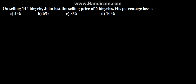The next problem in this series is on selling 144 bicycles. John lost the selling price of six bicycles, so we need to find his percentage loss. The options given are 4%, 6%, 8%, and 10%.